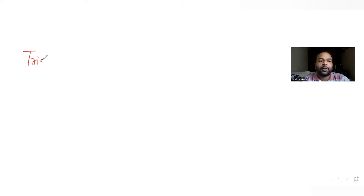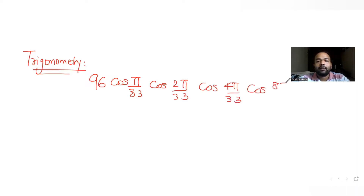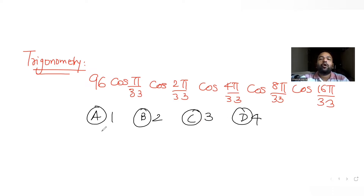Hi guys, I hope you are all doing well. Today's question is from the topic of trigonometry. They are asking us to find the value of the expression 96·cos(π/33)·cos(2π/33)·cos(4π/33)·cos(8π/33)·cos(16π/33). There are four options given — one, two, three, and four — and we need to find out which one is the correct answer.